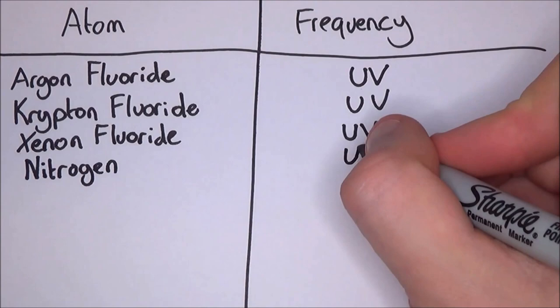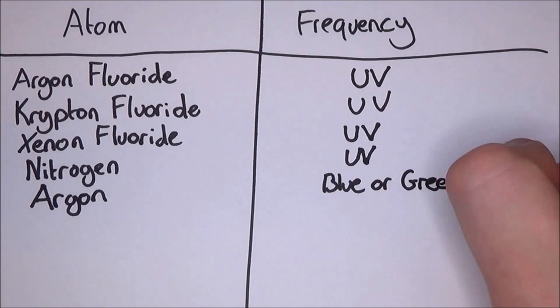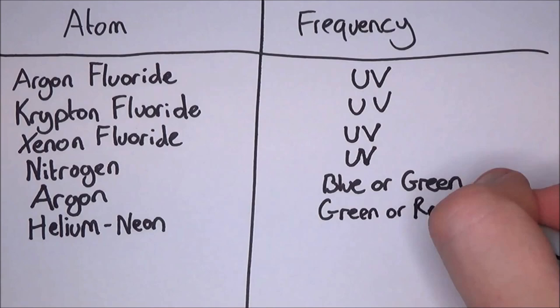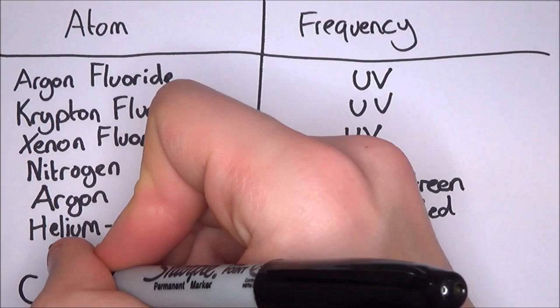Helium neon will do green or red, also depending on its conditions. Ruby, which is corundum aluminium oxide, will produce a, you guessed it, a red light. Carbon dioxide will produce a far infrared light. That means it's just on the far side of the infrared spectrum, near the microwaves.